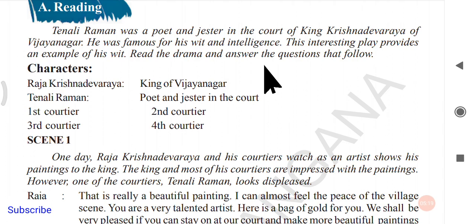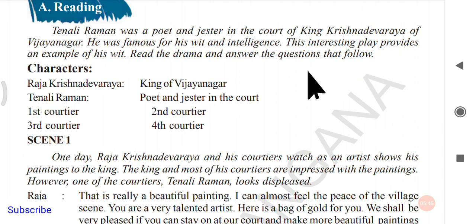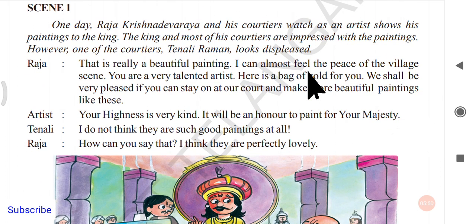The characters in this drama are: Raja Krishnadevaraya, king of Vijayanagara; Tenali Raman, poet and jester in the court; and several courtiers numbered first through fourth. This lesson is written in the form of a play with scenes and acts. We now begin Scene 1.